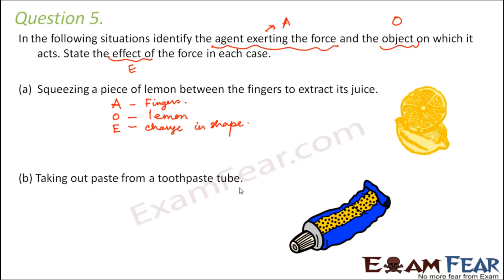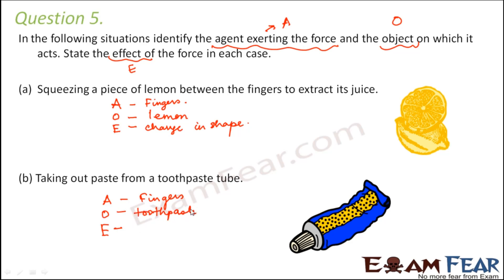Next: taking out paste from a toothpaste tube. The agent exerting force is again the fingers, because we press the tube with our fingers. The object is the toothpaste tube, since the force is being exerted on it. The effect is a change in shape, because the shape of the toothpaste tube changes as it is pressed.